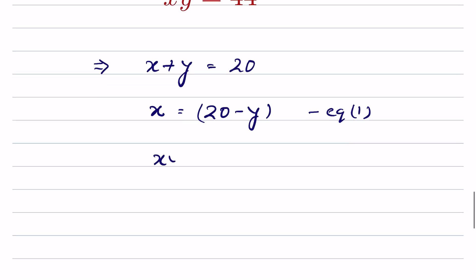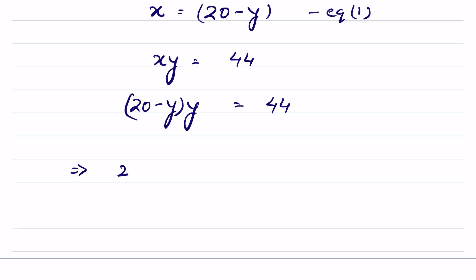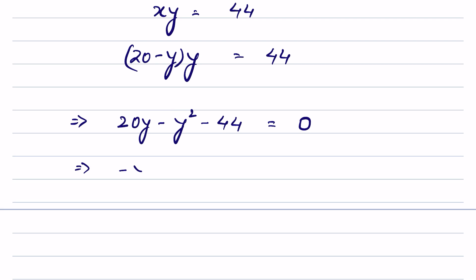From x times y equals 44, let's substitute equation 1 into this equation. So this will be (20 minus y) times y equals 44, or 20y minus y squared. Sending 44 to the left-hand side gives a quadratic equation: minus y squared plus 20y minus 44 equals 0.